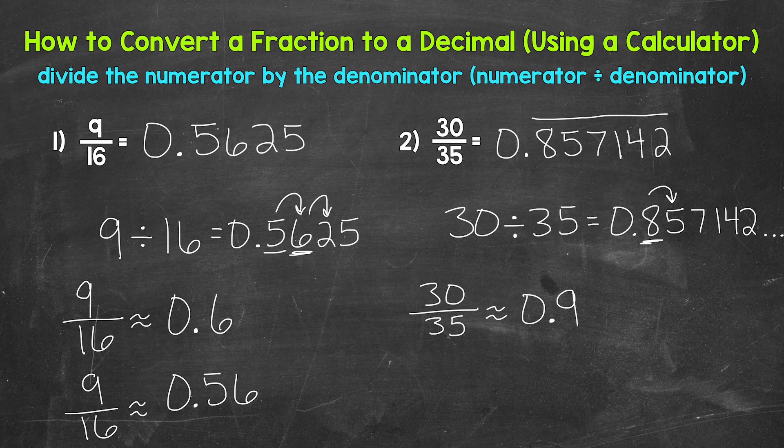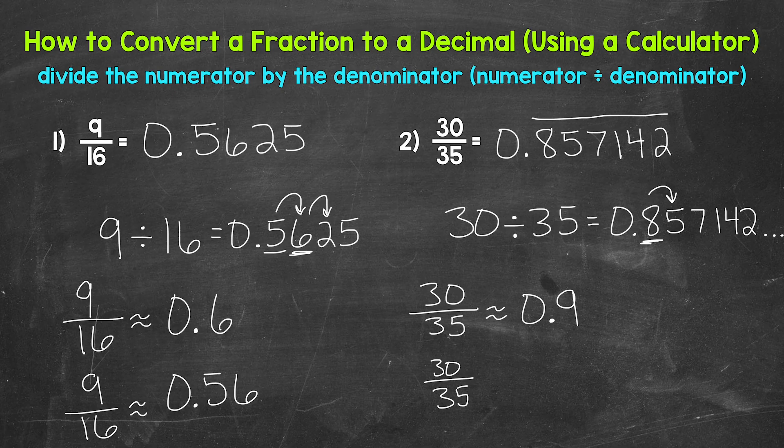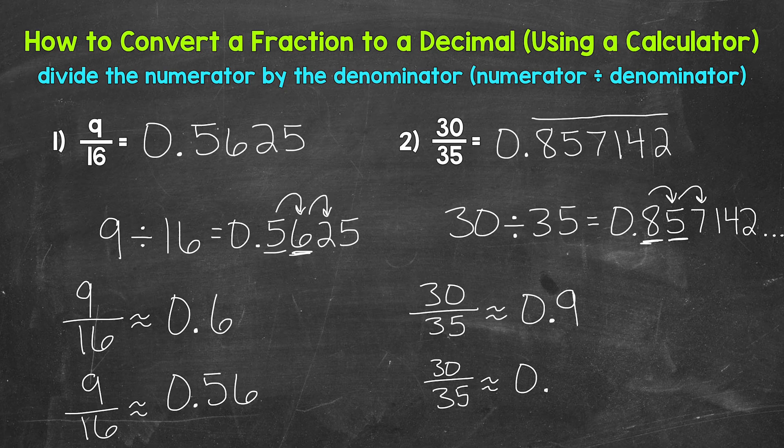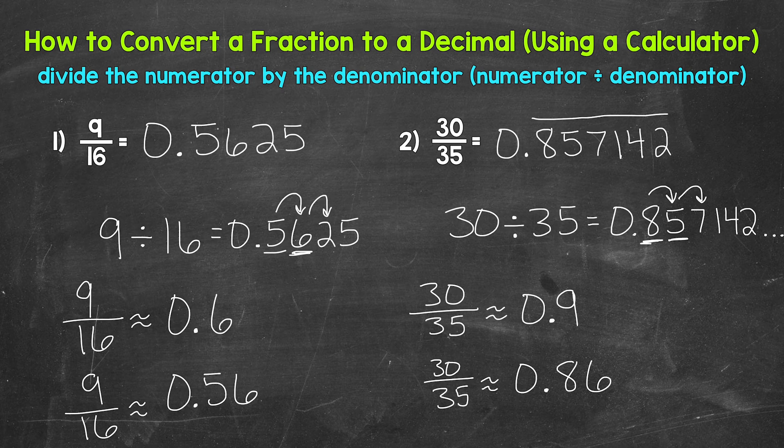So 30 thirty-fifths is approximately nine tenths. Now let's round to the hundredths, so 30 thirty-fifths is approximately, and then we have a five in the hundredths with a seven to the right in the thousandths. So this rounds up as well. 30 thirty-fifths is approximately 86 hundredths.